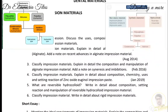Polyether rubber impression material also consists of a base paste and an accelerator paste. The base paste consists of polyether polymer, colloidal silica, and glycol ether phthalate as plasticizer. The accelerator paste consists of aromatic sulfonate ester as the cross-linking agent, colloidal silica as filler, and phthalate or glycol ether as plasticizer. The setting reaction: it is cured by reaction between aziridine rings at the ends of the branched polyether molecule. Polyether + sulfonic ester gives cross-linked rubber.